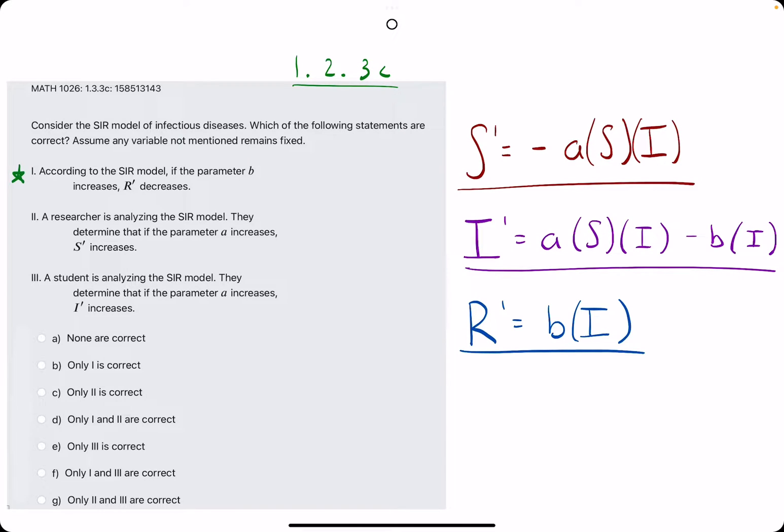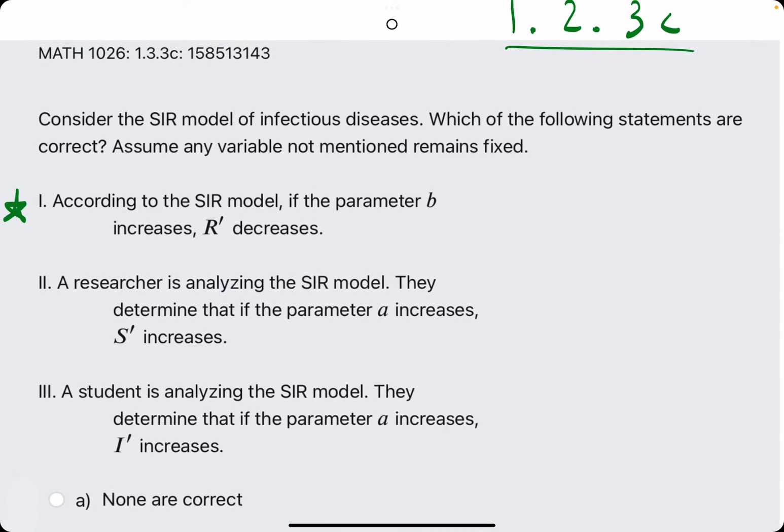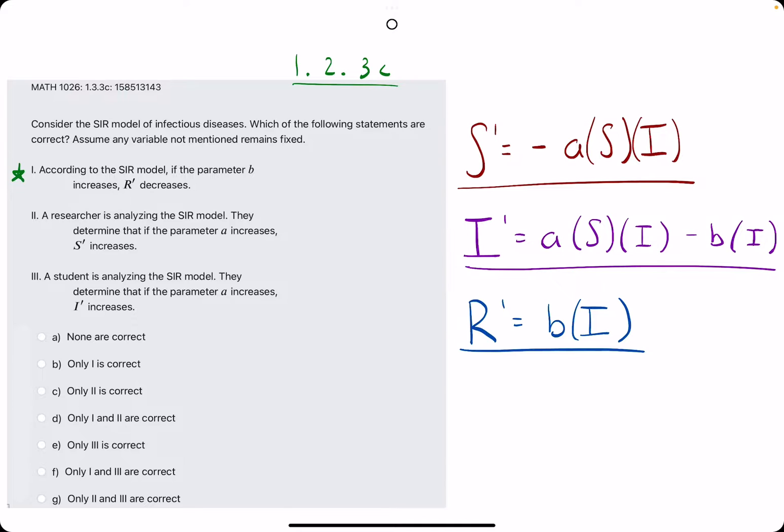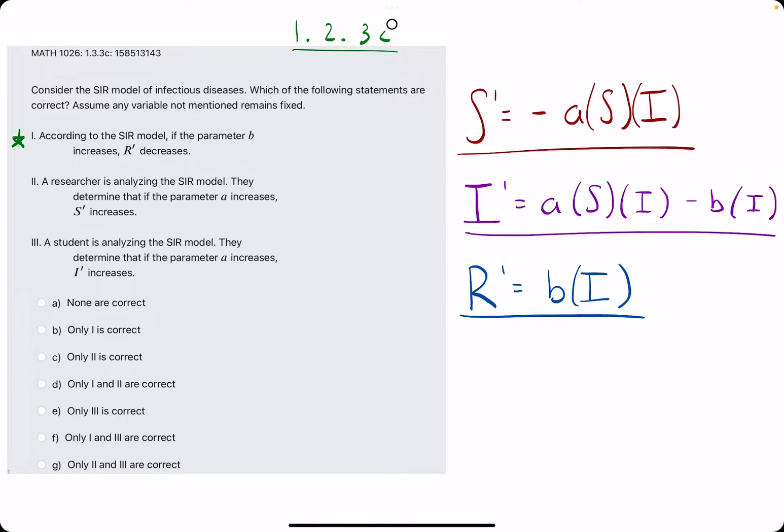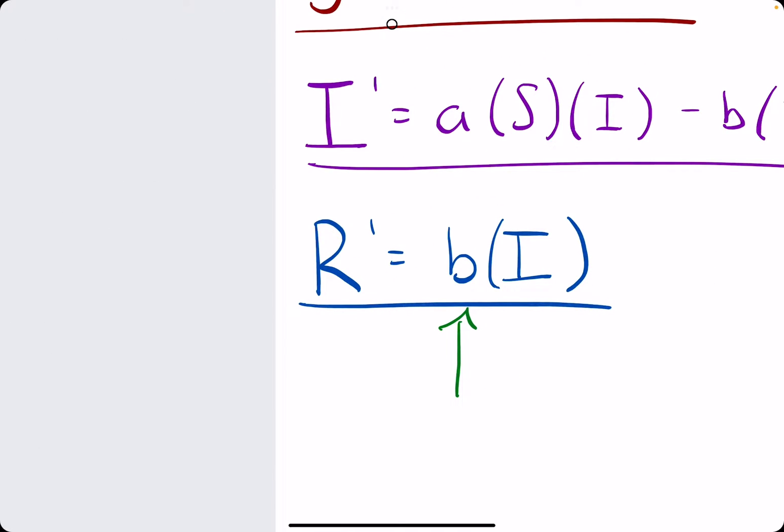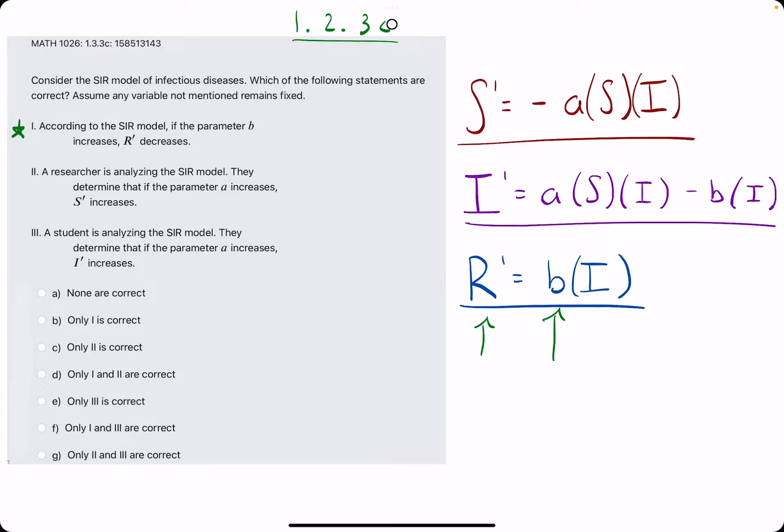Let's jump right into it. Statement one: according to the model, if parameter B increases, then R' decreases. We want to look at R' and think about what happens if B increases. Well, if B increases and the coefficient here is positive, then if B goes up, R' is also going up. In other words, R' should be increasing if B is increasing, but they don't say that, so statement one is false.